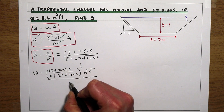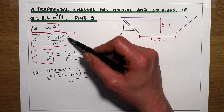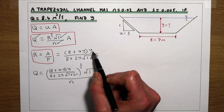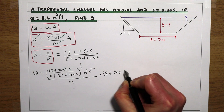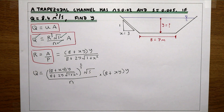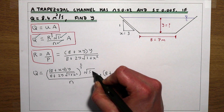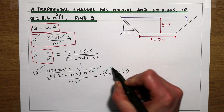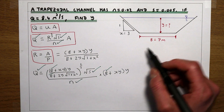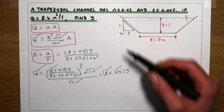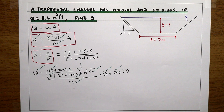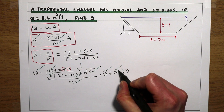Multiplying by √(S/N) and then by the cross-sectional area (B + XY)×Y gives us the full expression for Q. This expression looks complicated, but we are now at a point where the only unknown is Y — because we know S, N, Q, B (the base width given in the question), and X (equal to 3 from the 1-in-3 side slope). So the only unknown in the entire expression is Y.